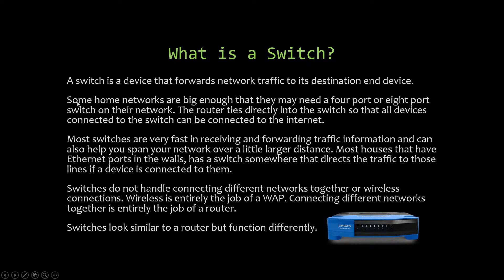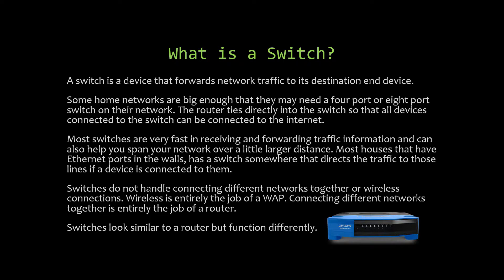Some home networks are big enough to need a four- or eight-port switch. The router ties directly into the switch so all connected devices can reach the internet and cross-communicate. Most switches are very fast at receiving and forwarding traffic and can help span your network over a larger distance. Switches do not handle wireless connections — that is entirely the job of the WAP, the wireless access point. Connecting different networks together is entirely the job of the router or gateway.